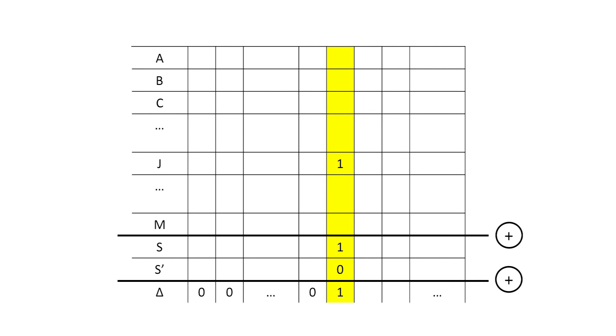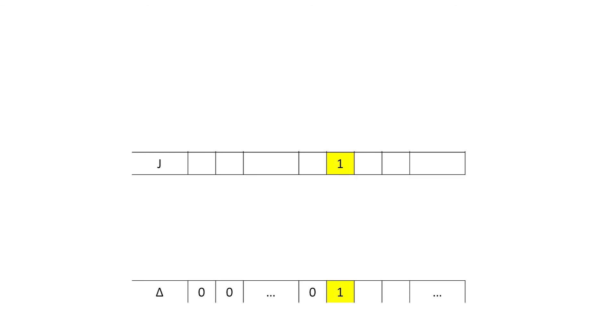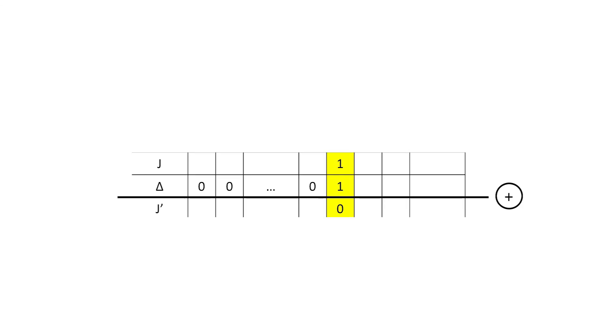The move which reduces the Grundy number of J to J prime is a move which also reduces the total Grundy number from S to S prime, and this concludes the proof of Botan's theorem.